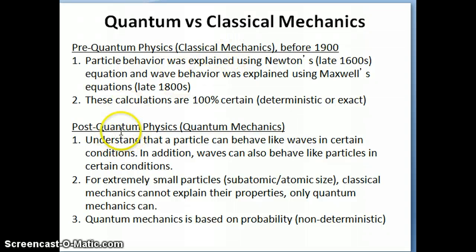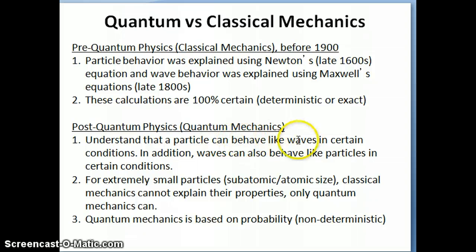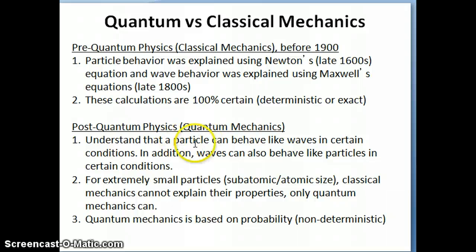As we go into quantum mechanics, we learn that certain particles, given certain conditions or a certain size, behave more like waves. So that's the first key insight from quantum mechanics, and it's something that's completely non-intuitive — it doesn't match what we see every day, because we never see a particle behaving like a wave in everyday life. But that's what we observe when dealing with things like electrons and smaller particles.